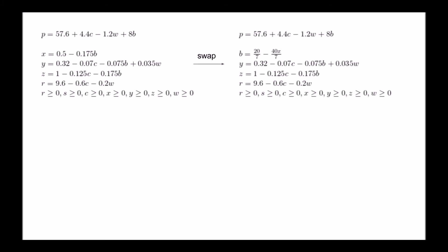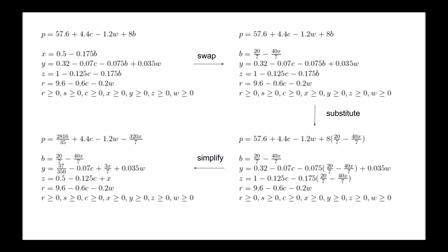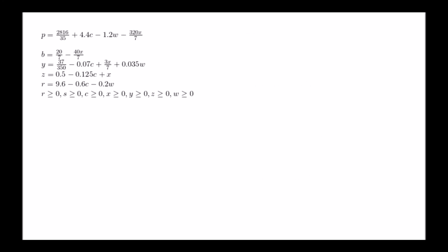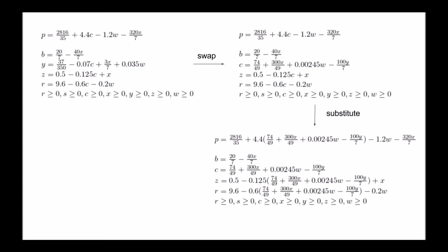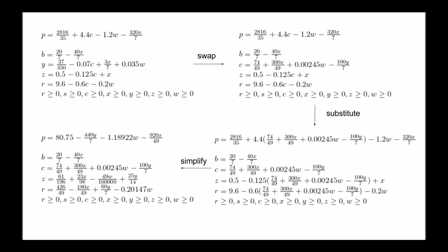Now we will do the substitution and simplification. Finally, we will do one last iteration on c. In equation y, c is at most 74 over 49, which is approximately 1.5. In equation z, c is at most 4, and in equation r, c is at most 16. So we will swap c and y as that is our lowest bound. We substitute in and simplify once more. Since there are no positive coefficients remaining in the objective function, we can now stop iterating, as no increase in any variable will increase our profits.